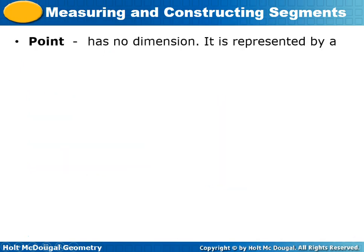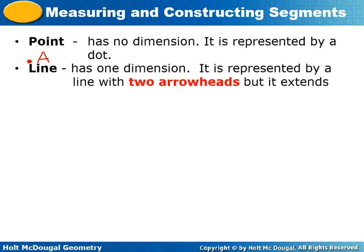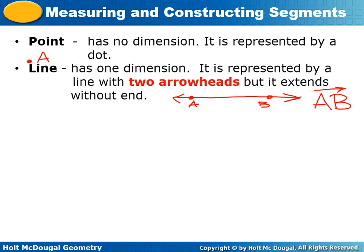Now let's talk about these definitions. The first one is point. A point has no dimension — it's represented by a dot. So if we talk about point A, we have literally a point like this labeled A. The next definition is a line. It has one dimension. It's represented by a line with two arrowheads, but it extends without end. This would be line AB, and the mathematical notation for a line is AB with a line with arrows on either end.